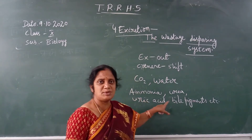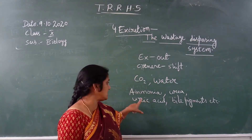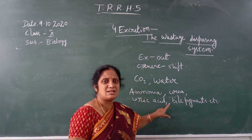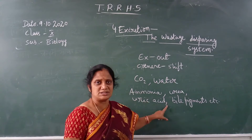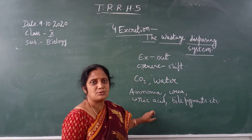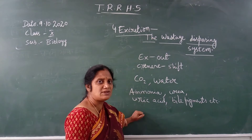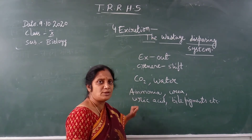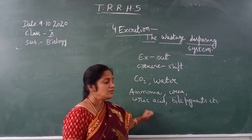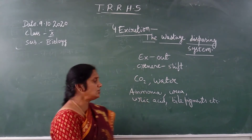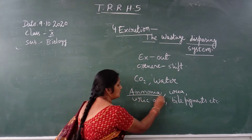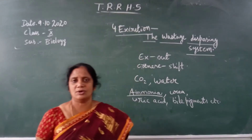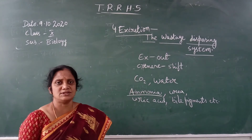Among all these waste materials, ammonia, urea, and uric acid are called nitrogenous waste. These nitrogenous wastes are very dangerous in our body, and that's why they should be removed. Among all these, ammonia is a very poisonous waste material, so it must be removed.